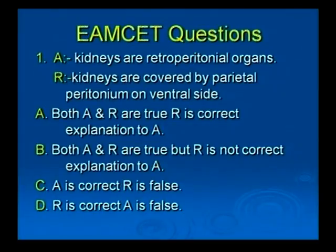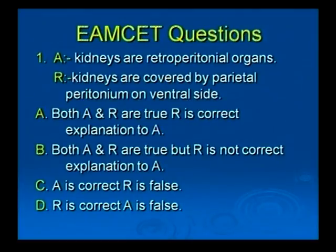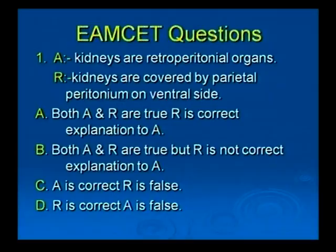Let us discuss the assertion-reason question: kidneys are retroperitoneal organs. Kidneys are covered by parietal peritoneum on the ventral side — that is the reason. The correct answer is that both assertion and reason are correct, and the reason is the correct explanation for the assertion. Kidneys are retroperitoneal organs because they are covered only on the ventral side by the parietal peritoneum, as we can observe in the real kidney.